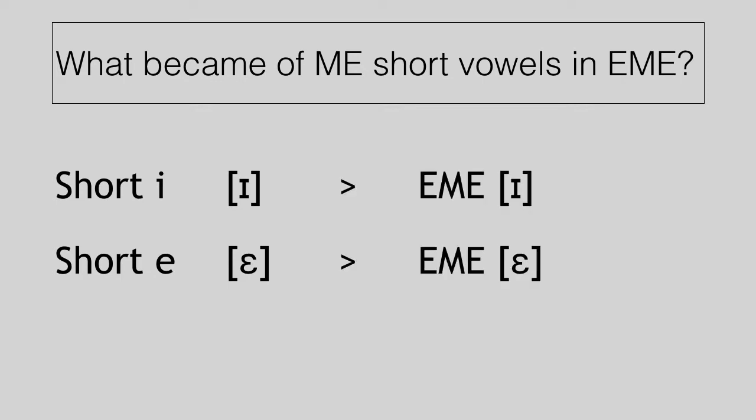Neither of those changed in Early Modern English. So if it had an [ɪ] in Middle English, you expect it to come out with an [ɪ] in Early Modern English and actually in Present English as well. Same thing for [ɛ]. If it was an [ɛ] earlier, it's an [ɛ] today. And actually, this is largely true going back all the way to Old English. Old English short I was an [ɪ], continued to be an [ɪ] in Middle English, continued to be an [ɪ] in Early Modern English, and is usually an [ɪ] today.